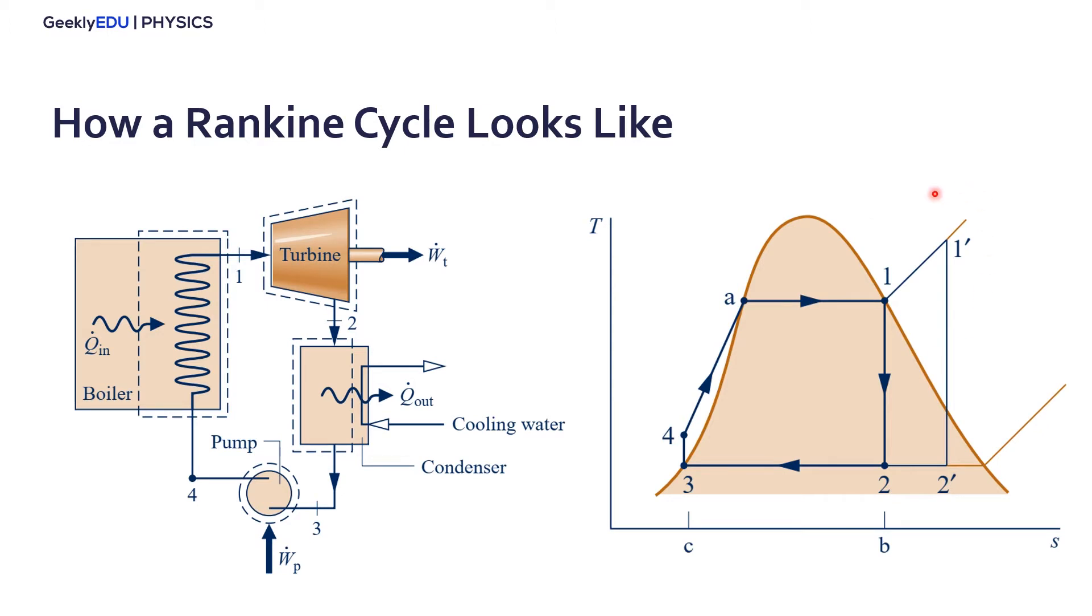So we have point number one, we pass the vapor through the turbine. It expands in the turbine generating electricity, work. And from the outlet of the turbine we reach point number two. At this point here we generally have a mix of liquid water and vapor. And so we want now to decrease the temperature of this water.